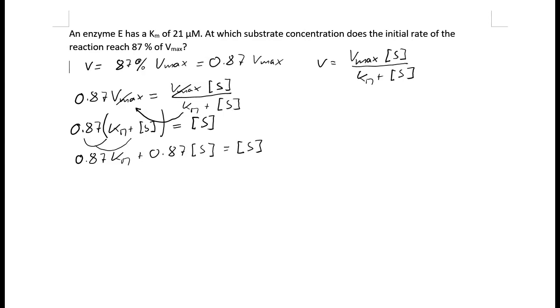And what we can do now is we put everything with S onto the right hand side and everything that is not S stays on the left hand side. So we get 0.87 times Km equals substrate concentration minus